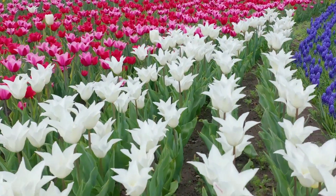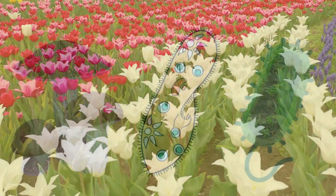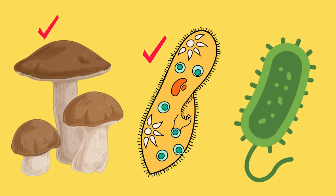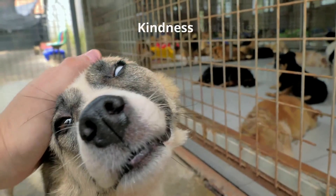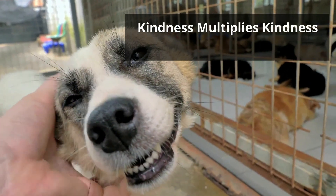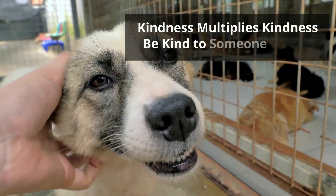Vacuoles are also found in fungal cells, protists, and some bacteria. So, in summary, when you hear the term vacuole, think storage — storage of waste and water in cells. Thanks for watching and remember, kindness multiplies kindness. Be kind to someone today.